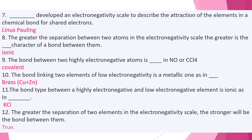Number ten: the bond linking two elements of low electronegativity is a metallic bond, as in brass — copper plus zinc, Cu plus Zn. Number eleven: the bond type between a highly electronegative and a low electronegative element is ionic, as in KCl — potassium chloride. Number twelve: the greater the separation of two elements in the electronegativity scale, the stronger the bond between them — this is true.